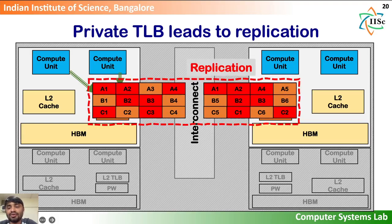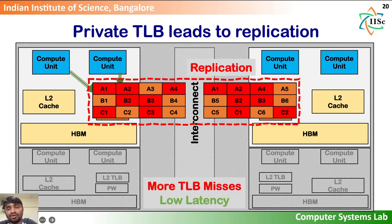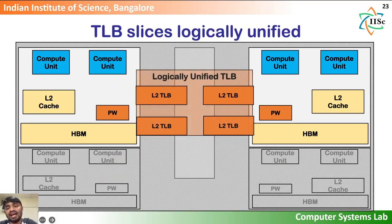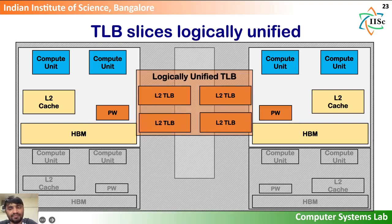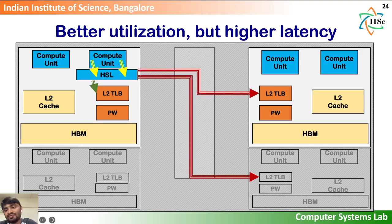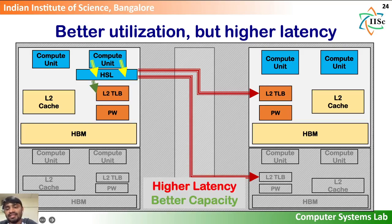However, with private TLB, the L2TLB entries can be replicated across L2TLB slices on different chiplets. This replication leads to lower aggregate TLB capacity and thus higher L2TLB miss rates. Thus, private TLB provides low-latency TLB lookups at the cost of higher L2TLB miss rates. The other alternative is a shared TLB configuration where the L2TLB slices across chiplets are treated as a single logically unified TLB. A hash function — referred to as HSL or home slice selection function — is employed at the compute units to hash the virtual address and determine the L2TLB slice responsible for servicing a given virtual address. The shared TLB design benefits from higher aggregate capacity but suffers from higher average TLB lookup latency, as a large fraction of L2TLB lookups can be remote.